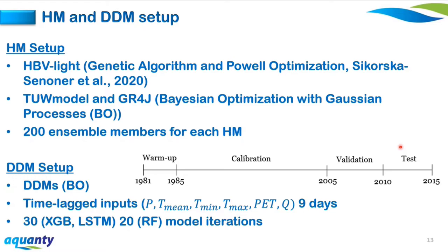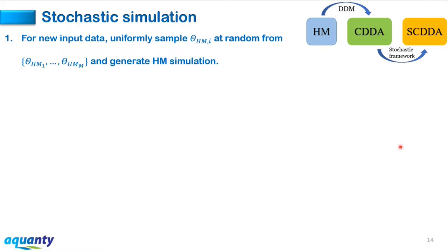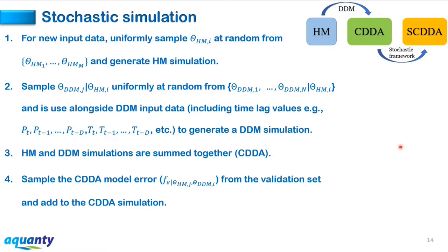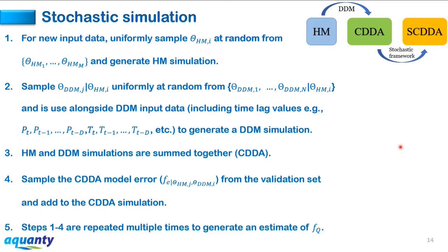The data-driven models use Bayesian optimization to tune hyperparameters with time-lagged inputs up to nine days, with 30 or 20 model iterations per ensemble of the hydrological model. For stochastic simulation: for new input data, a hydrological model parameter set is randomly selected to generate a simulation; given that parameter set, a data-driven model parameter set is randomly selected to generate its simulation; the two simulations are summed (this is the CDDA); then a CDDA model error is randomly picked from the validation set using K-Nearest Neighbours and added to the CDDA simulation. These steps are repeated multiple times to generate an estimate of f(Q).